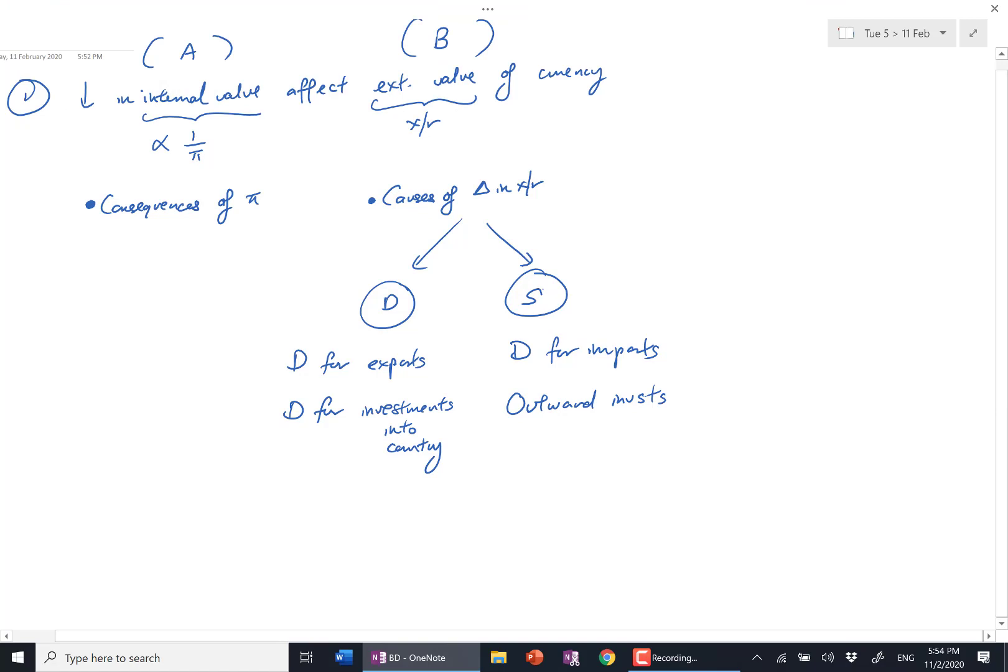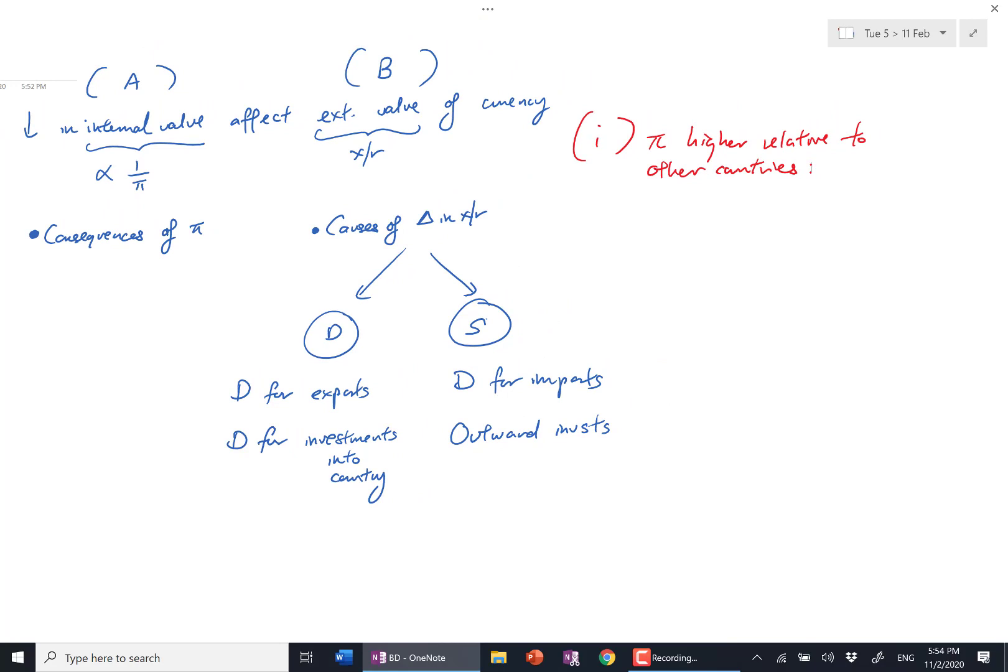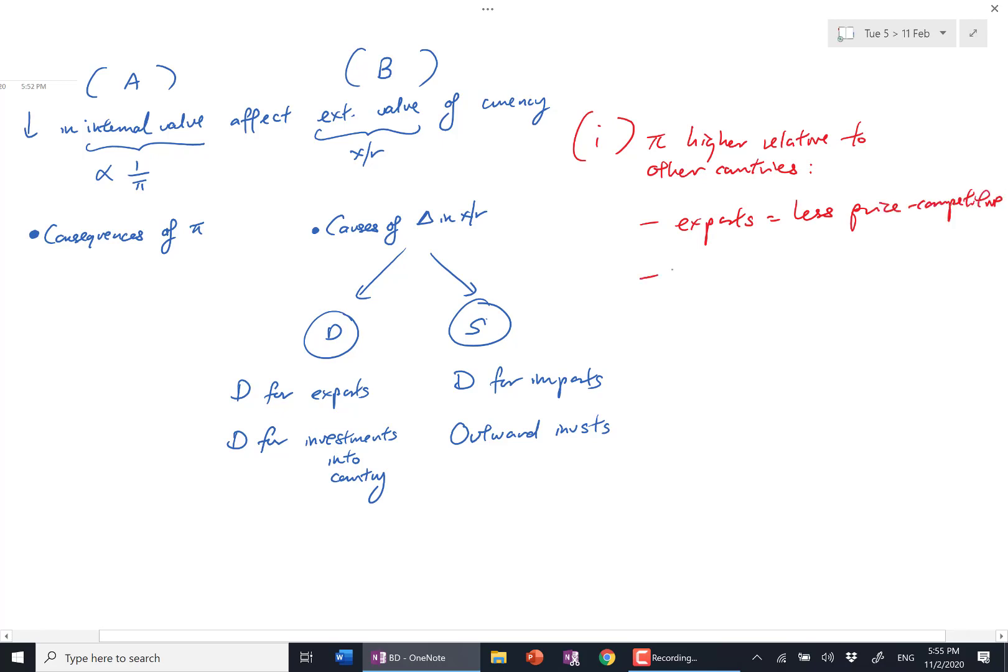So if I were to draw my links, I can think of at least three points. First one: if your inflation rate is higher relative to other countries, this is a point that all of you are familiar with because in the notes when they say factors affecting X minus N, they always say relative inflation rates. So if inflation goes up because the internal value falls, if my inflation rate is now higher, it means my exports become less price competitive, which means they become more expensive.